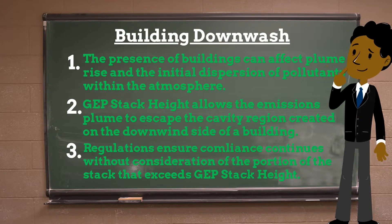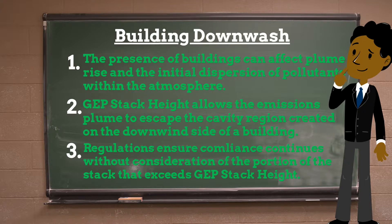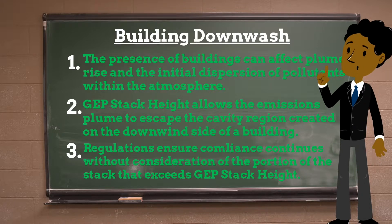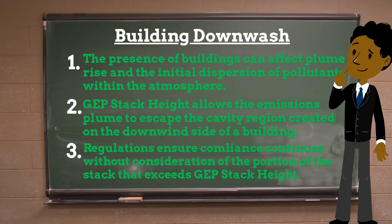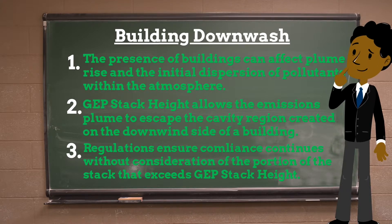In addition to defining good engineering practice stack height, the Clean Air Act requires the Environmental Protection Agency's administrator to implement good engineering practice stack height regulations in order to ensure that compliance with air quality standards continues to be demonstrated without consideration of the portion of the stack that exceeds the good engineering practice stack height, or any other dispersion techniques prohibited under the act, such as merging gas streams and intermittent controls.